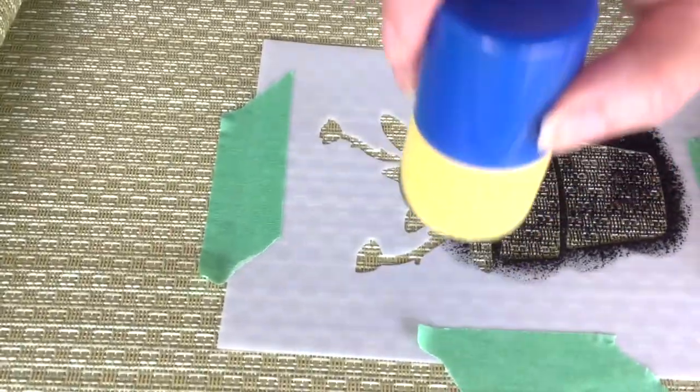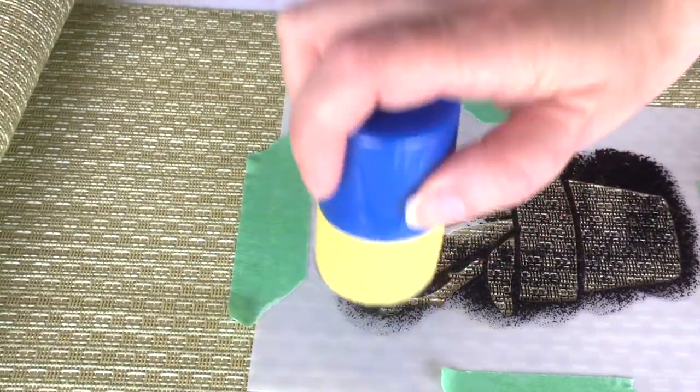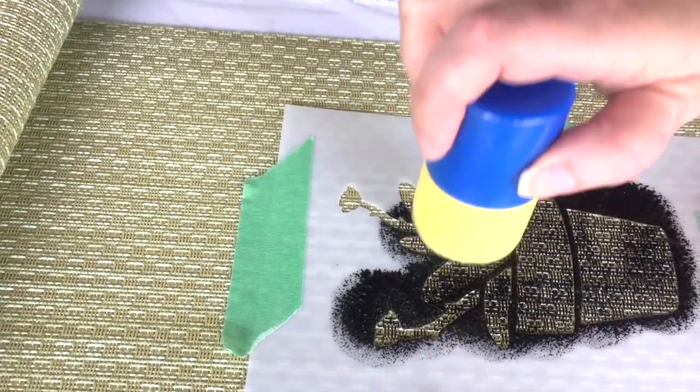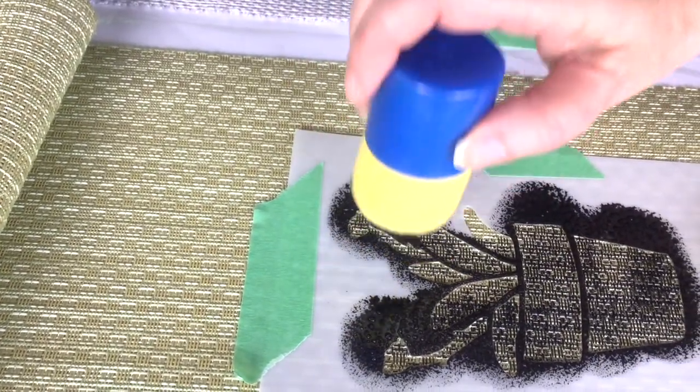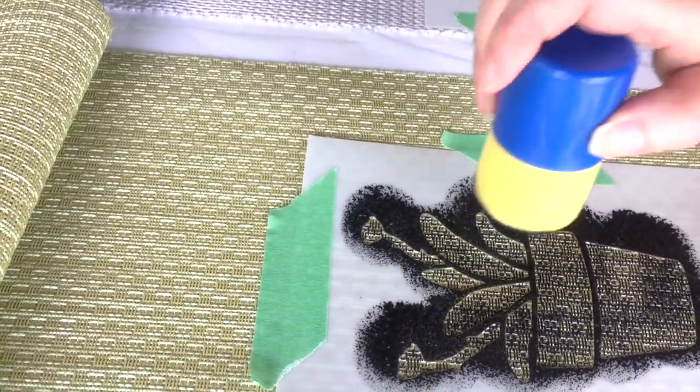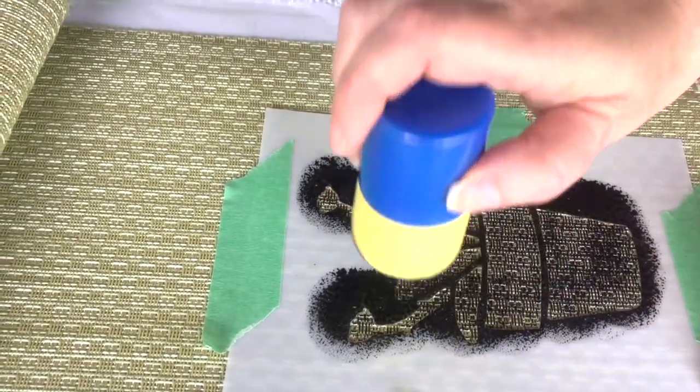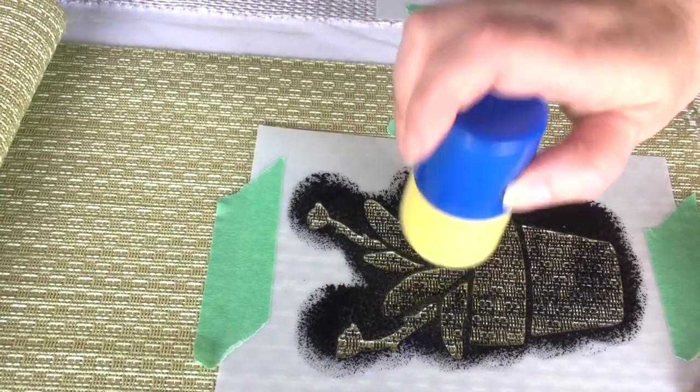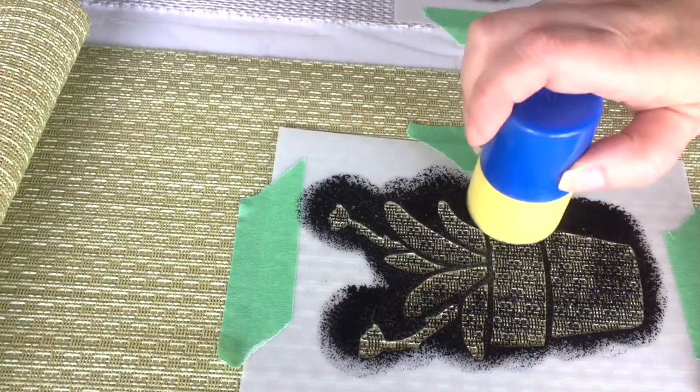You just want a light up and down motion. You're just pouncing directly up and down. What you don't want is for the paint to seep underneath, so an up and down motion should help. Now this seems like it's a little wetter than my first applicator was, so we'll see if we get any seepage underneath.